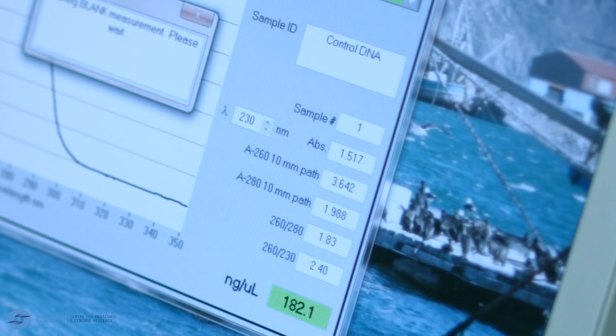Running buffer, in this case 1x TBE containing ethidium bromide, is added to the tank. The gel is lowered into the gel tank and the samples, together with the high molecular weight DNA ladder, are loaded onto the gel.